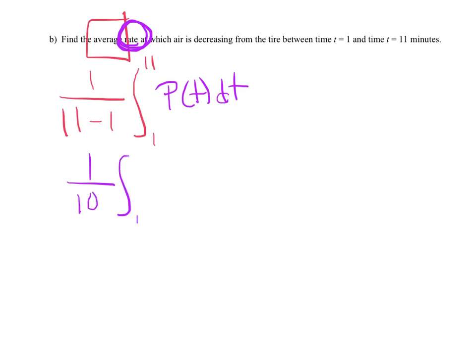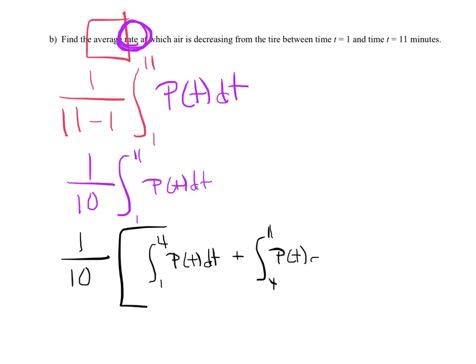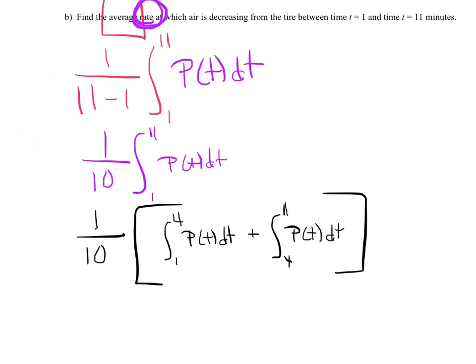If you go back and read the problem, we made it very clear that P of t represents the rate. I am averaging P of t dt. I've got 1 tenth the integral from 1 to 11 of P of t dt. Again, you can't just throw it out there from 1 to 11 because you have a piecewise function with a breakpoint at 4. Watch my notation. I'm going to have to integrate from 1 to 4 of P of t dt and add onto it the integral from 4 to 11 of P of t dt. I had to take that breakpoint into consideration.